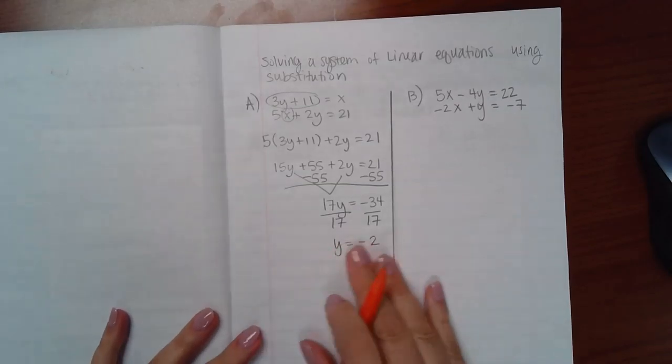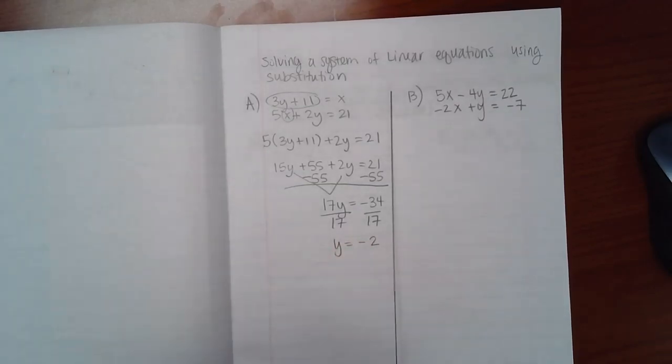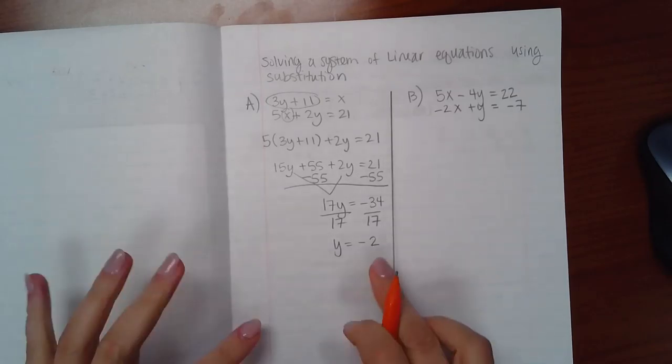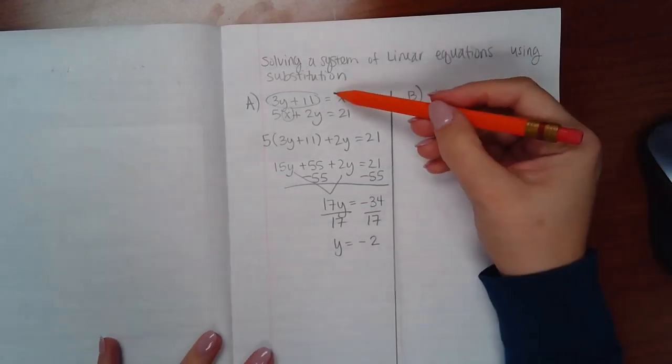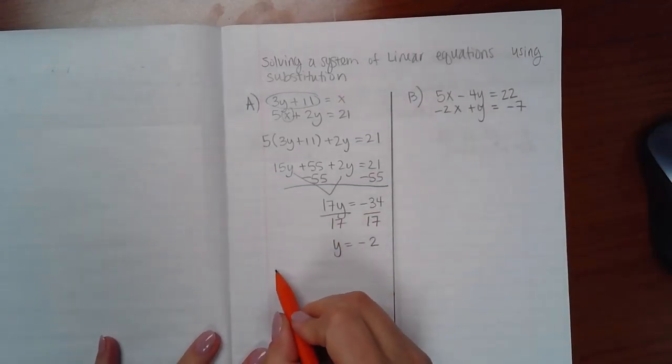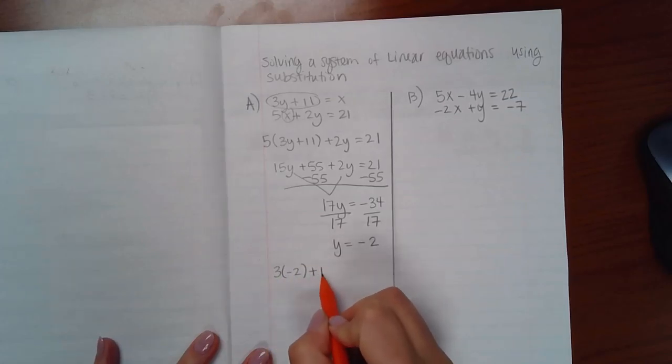Now, that's one part of the solution. Remember, systems of equations, the solution is a point. So we need an x coordinate and a y coordinate. I have the y coordinate, I'm just missing the x coordinate. So we go back into that top equation, and instead of writing y, rewrite what y is equivalent to.